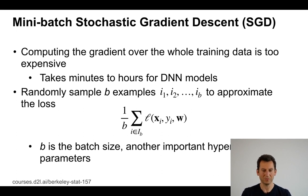So I take a mini batch. What I do is I randomly sample some set B of observations to approximate the loss and I now use this as a mini batch to perform the update and the batch size is another hyperparameter.